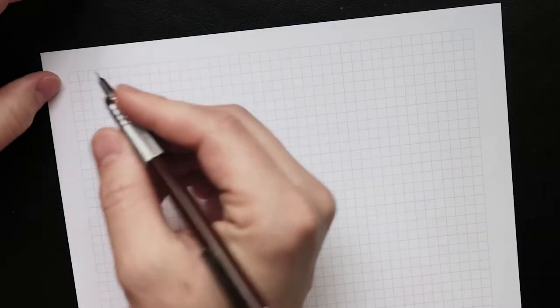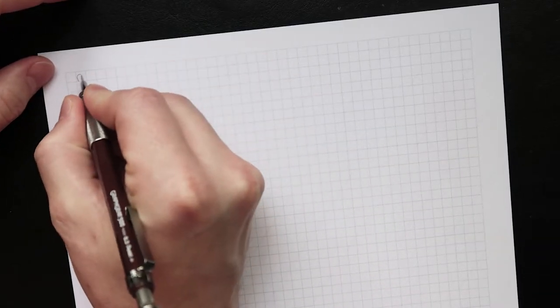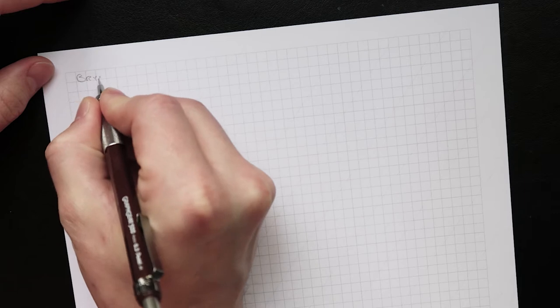Now I got my pencil, I got my eraser, I got my graph paper. Let's go! We're going to write on the top corner here the name we are designing, just so I have a spelling reference.